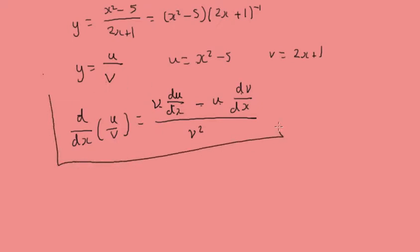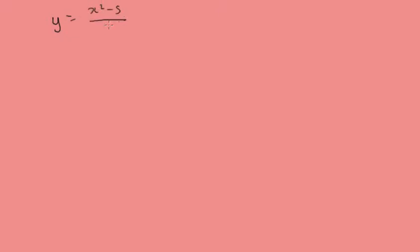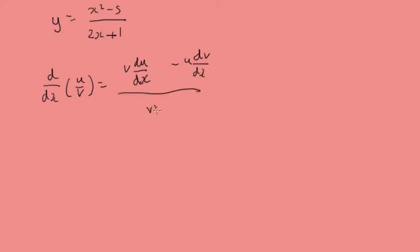When you're doing quotient rule examples, you're going to have to manipulate some nasty fractions — just to warn you. So let's start off with the example we just talked about. d/dx of u over v will be v du/dx minus u dv/dx over v squared, where u is x squared minus 5 and v is 2x plus 1.